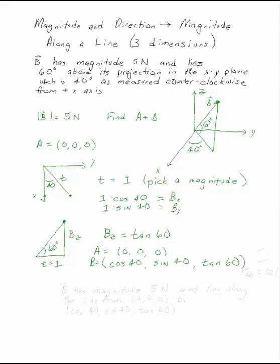Please be careful. This is not the vector B. The vector B has magnitude 5 Newtons and lies along the line from (0, 0, 0) to (cosine 40, sine 40, tan 60).